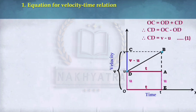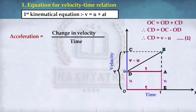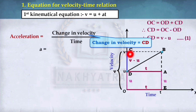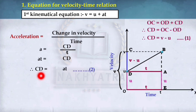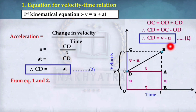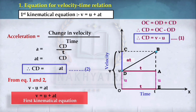For the velocity-time relation, the first kinematical equation is V = U + AT. Acceleration equals change in velocity divided by time, so A = CD/T. Rearranging gives AT = CD, and since CD = V − U, we get V − U = AT, therefore V = U + AT. This is the first kinematical equation.